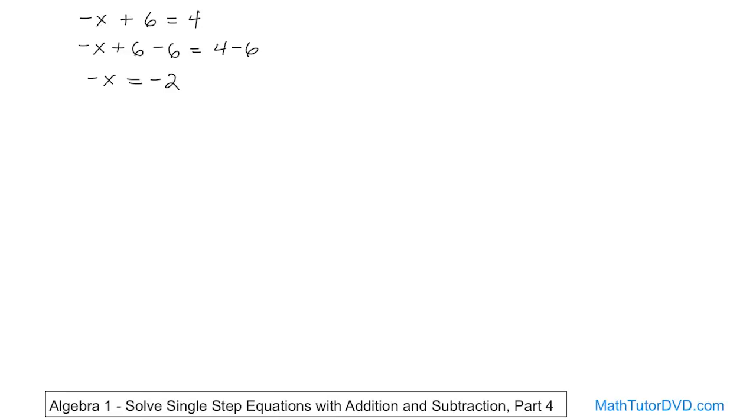So here is where a lot of students get confused at this point. They don't know what to do next because you're trying to get x by itself, but here you don't quite have x by itself. You have negative x. So that's not really quite the answer.